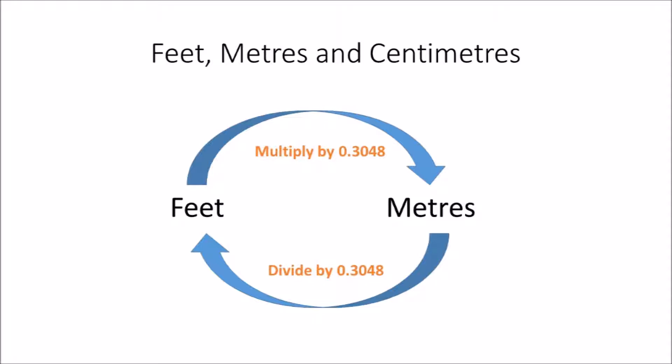To convert feet to meters, you multiply the amount you have in feet by 0.3048. If you have your measurement in meters and want to convert to feet, you divide the amount in meters by 0.3048. The conversion factor between feet and meters is 0.3048.